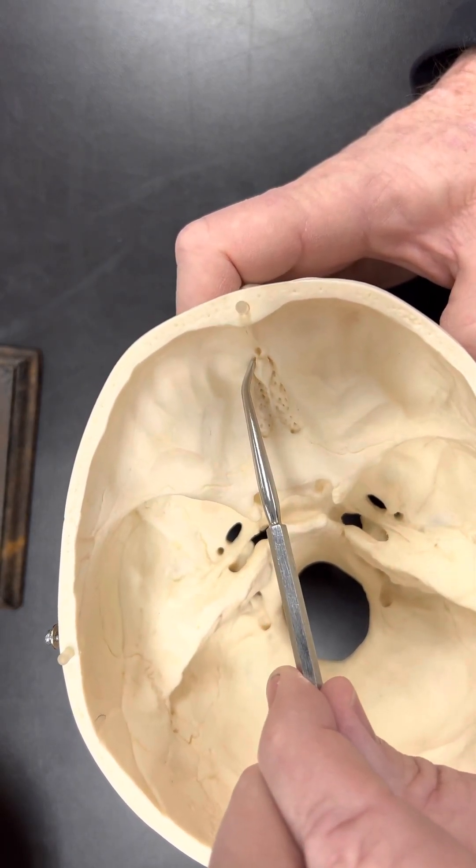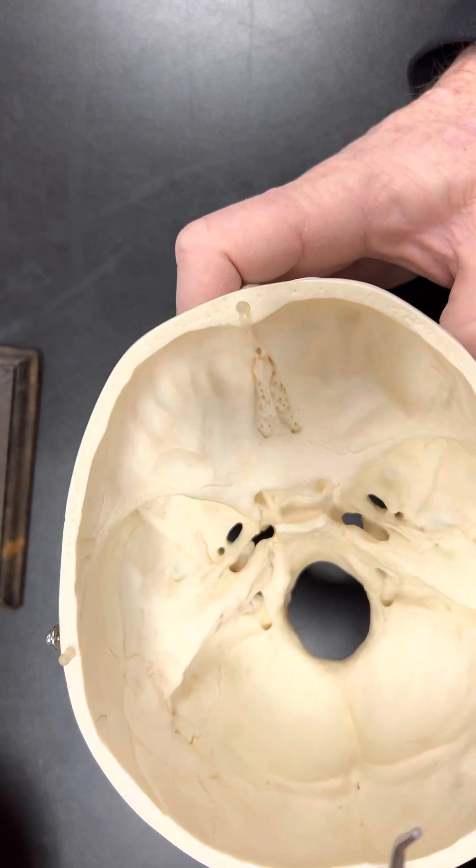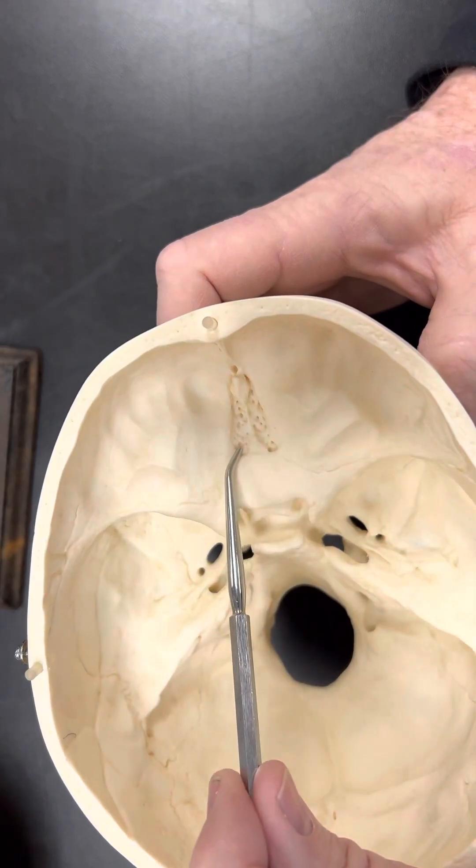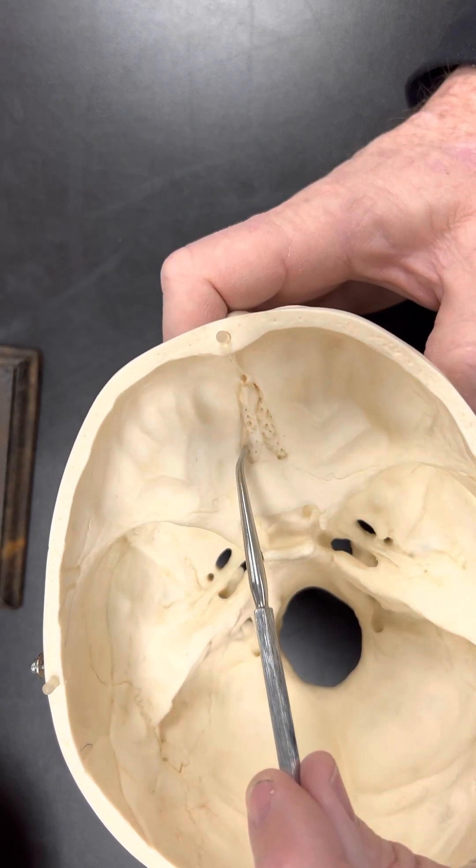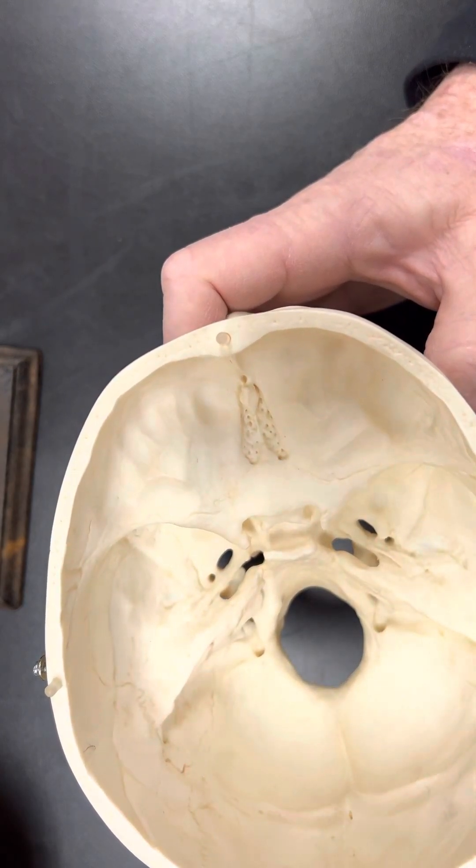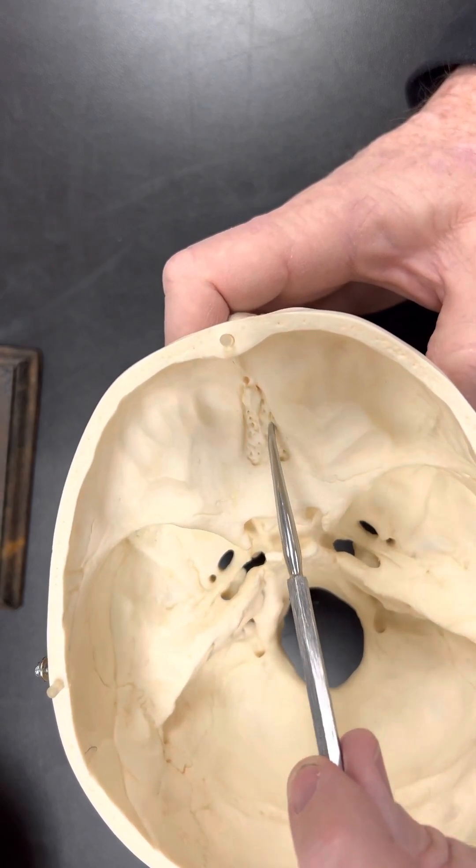And then if you notice we have this structure that's right in here. This is going to be part of my ethmoid bone. We have two things here. If you notice we have these little holes right there. This whole part right here is called the cribriform plate, and the nerves from your nose are actually going to come in through these, or pass through these.